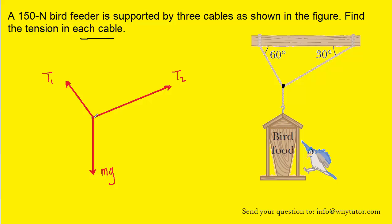The most obvious force is the gravitational force, or the weight of the bird house, directed downward — we can label that force as mg. In order to support that downward acting force, we need forces pointing upward, and those are going to be the tensions T1 and T2. Their arrowheads are drawn in this direction to indicate those forces are acting upward.